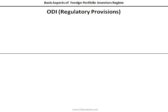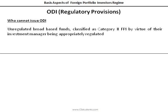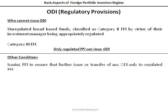The regulations also provide that two categories of FPI shall not be allowed to deal with ODI, whether directly or indirectly. The first is: those unregulated broad-based funds which are classified as Category 2 foreign portfolio investor by virtue of their investment manager being appropriately regulated. And second, Category 3 foreign portfolio investors will not be allowed to deal in ODI. Means only regulated FPI will be entitled to issue, hold, or deal with the ODI. And the foreign portfolio investor will have to ensure that further issue or transfer of any Offshore Derivative Instruments is made only to persons who are regulated by an appropriate foreign regulatory authority.